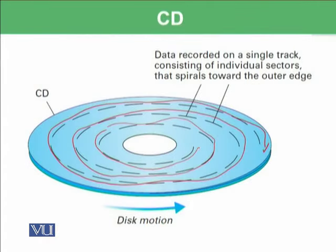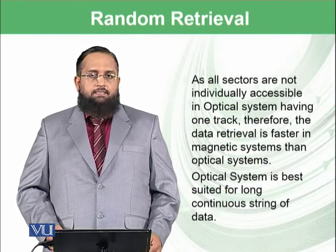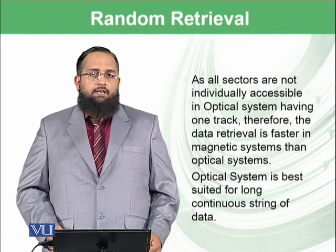If you are reading data from one position and suddenly want to read data from another position, there is no random access as was available with magnetic discs. The whole CD will spin to reach the desired position. You may have noticed that when you change the track of audio music, it spins a lot because it needs to reach the position from where the data can be read. This means that in CDs, random retrieval is not possible, which is one of the shortcomings of storing data on a CD.